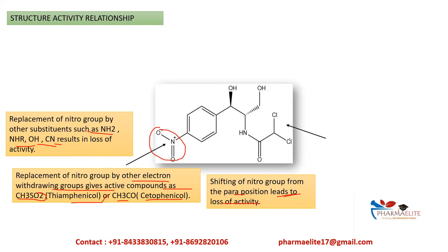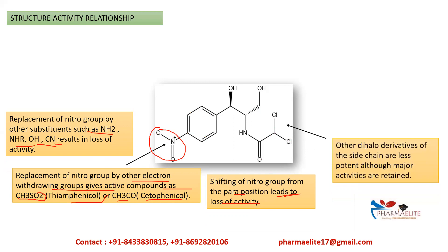Regarding the dichloro group: other dihalo derivatives of the side chain are less potent, although major activity is retained. If we substitute the chlorines with any other halogens, it gives a less potent compound, but the major activities are still retained.